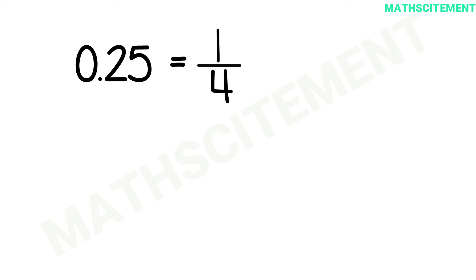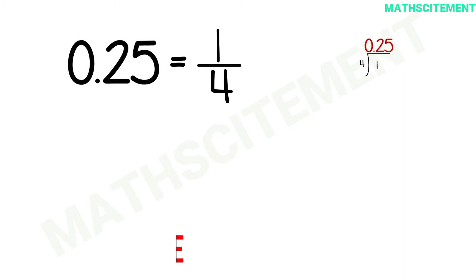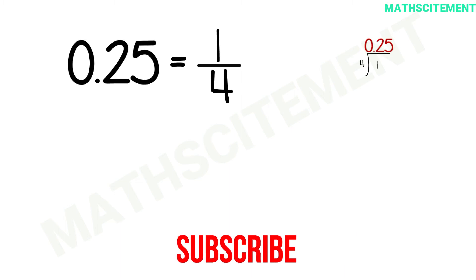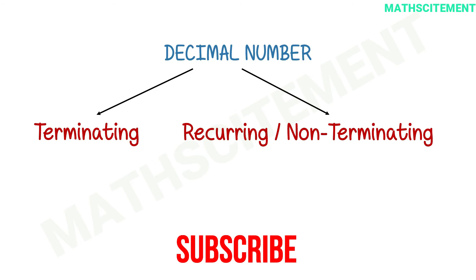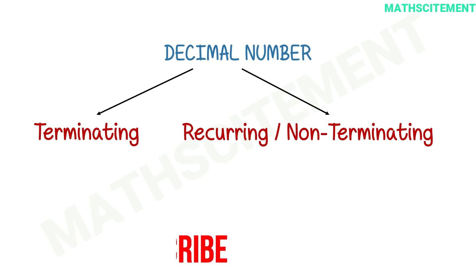A decimal number is actually a decimal expansion or representation of a fraction or a rational number. It is the quotient we get after dividing a numerator by the denominator. A decimal number can be terminating or non-terminating recurring.